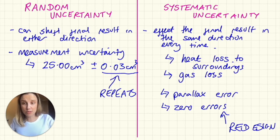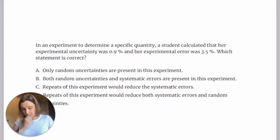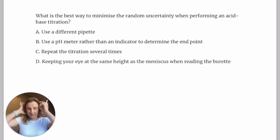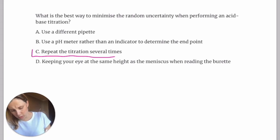So let's have a look at how this comes up in exam questions. So this one first. What is the best way to minimize the random uncertainty when performing an acid-base titration? We talked about the fact that random uncertainties are always, always, always about repeats.